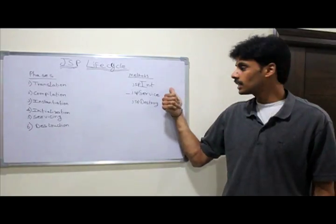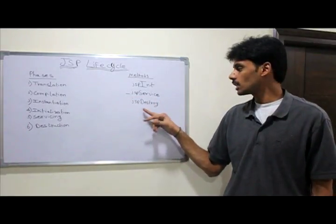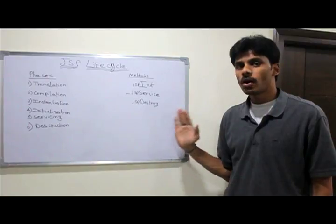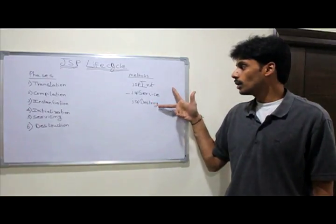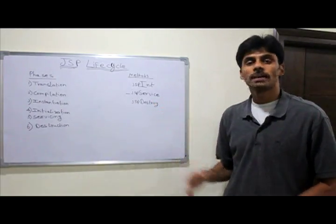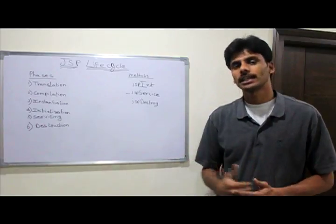So there are only three methods: JSP init, underscore JSP service, and JSP destroy which will be called in that order. As you know, the JSP init and JSP destroy methods are called only once just like in servlets.